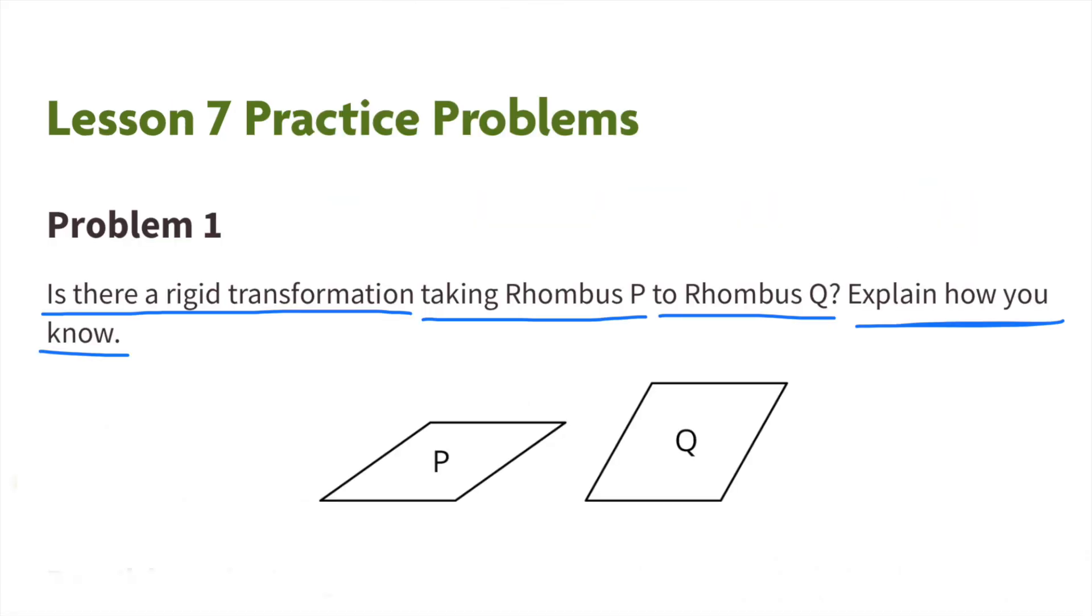Number 1. Is there a rigid transformation taking Rhombus P to Rhombus Q? Explain how you know.